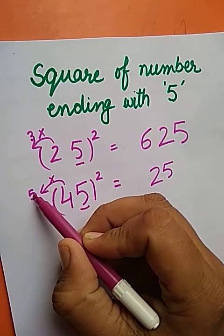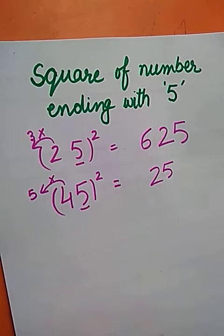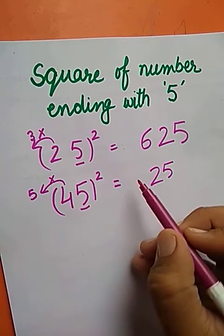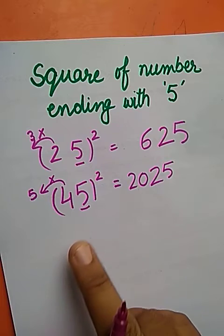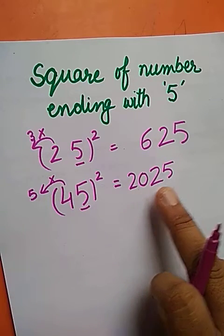We will take the product of 5 and 4. 5 times 4 is 20. So square of 45 is 2025.